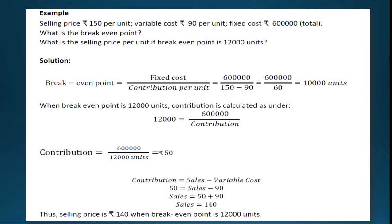Now we will solve one example. The data given is: Selling Price = Rs. 150 per unit, Variable Cost = Rs. 90 per unit, Fixed Cost = Rs. 6 lakhs. We have two questions: first, what is the break-even point? Second, what is the selling price per unit if the break-even point is 12,000 units?